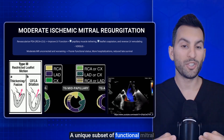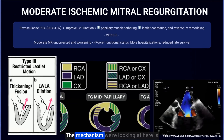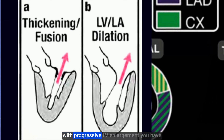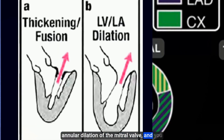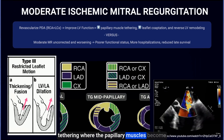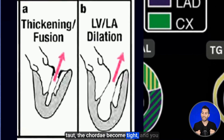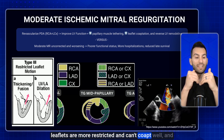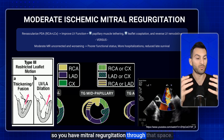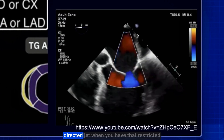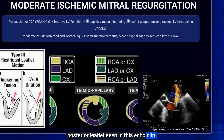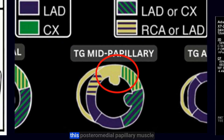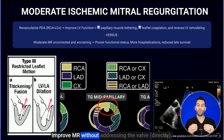A unique subset of functional mitral regurgitation is ischemic mitral regurgitation. With progressive LV enlargement, you have annular dilation of the mitral valve and papillary muscle displacement. As the LV cavity enlarges, apical tethering occurs — the papillary muscles become taut, the chordae become tight, and you have restricted leaflet motion during systole. When the valve would normally coapt well, those leaflets are more restricted, resulting in mitral regurgitation. You can often see a slightly posteriorly directed jet from the restricted posterior leaflet on echo.